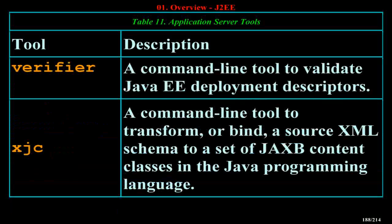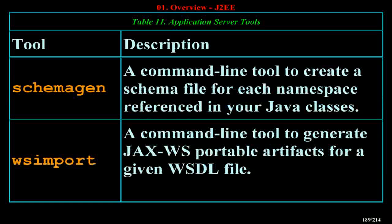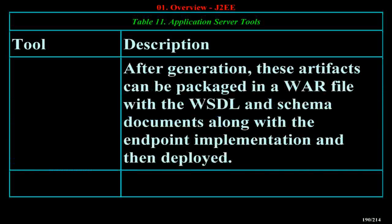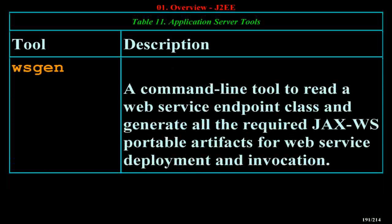Verifier is a command-line tool to validate Java EE deployment descriptors. XJC is a command-line tool to transform, or bind, a source XML schema to a set of JAXB content classes in the Java programming language. Schemagen is a command-line tool to create a schema file for each namespace referenced in your Java classes. Wsimport is a command-line tool to generate JAX-WS portable artifacts for a given WSDL file; after generation, these artifacts can be packaged in a WAR file with the WSDL and schema documents along with the endpoint implementation and then deployed. Wsgen is a command-line tool to read a web service endpoint class and generate all the required JAX-WS portable artifacts for web service deployment and invocation.